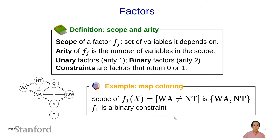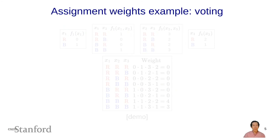One thing to remember about factors is that each factor usually depends only on a subset of the variables, not all the variables. This is going to be important when we talk about algorithmic efficiency.